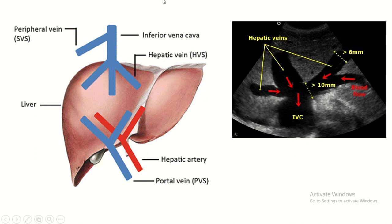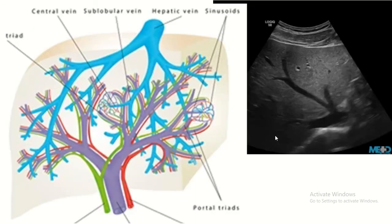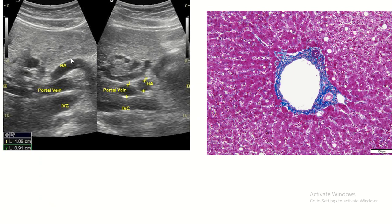When scanning you can see the gallbladder with its echogenic wall. The portal vein wall is echogenic, while the inferior vena cava wall is not echogenic. The hepatic artery wall is echogenic, and the portal vein wall is echogenic — but the inferior vena cava wall and hepatic vein wall are not echogenic.